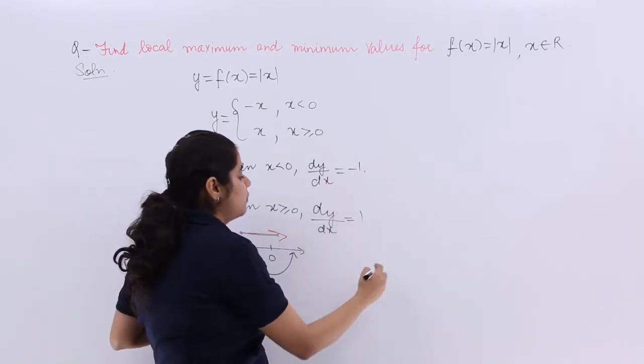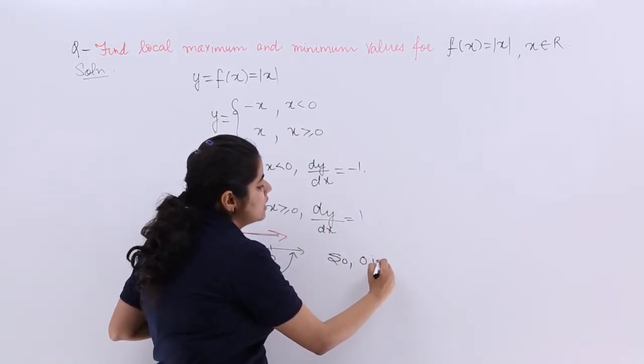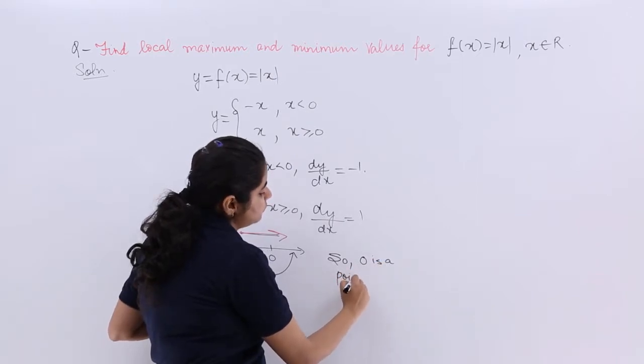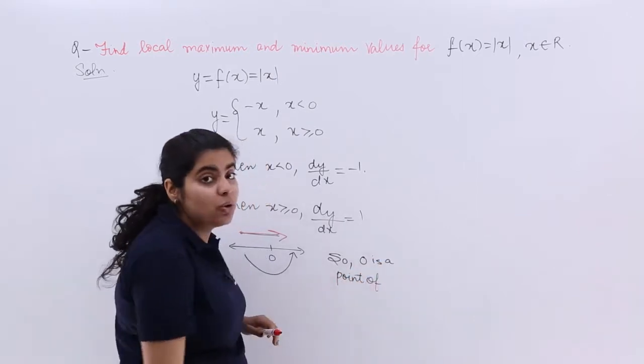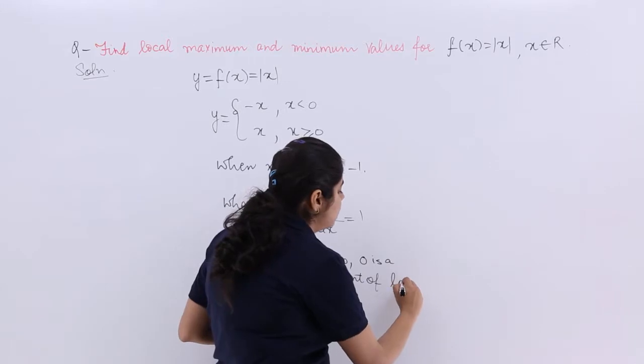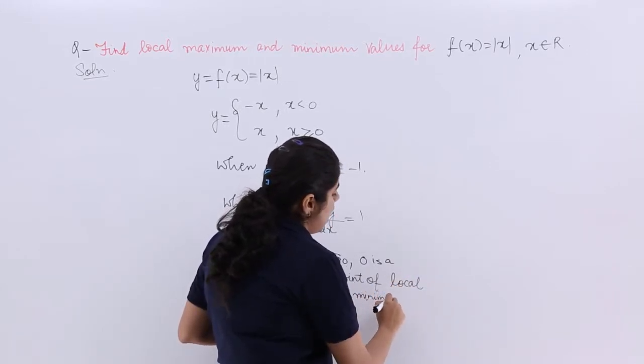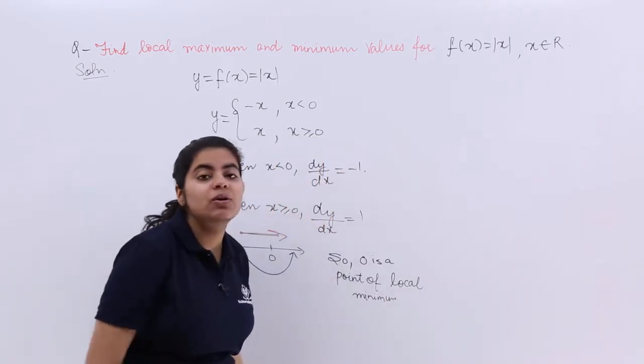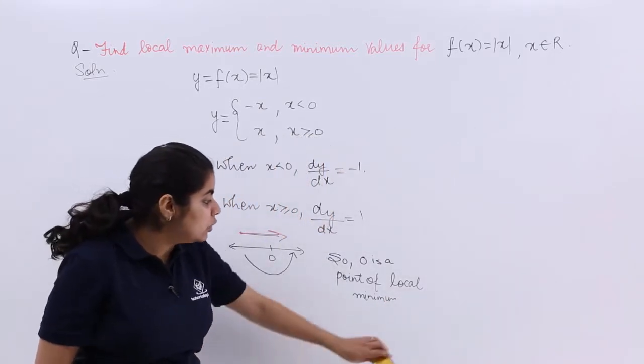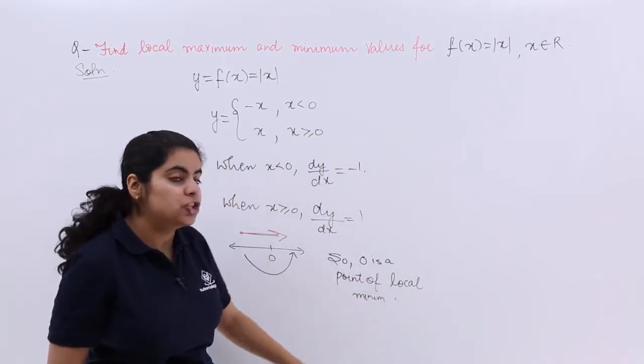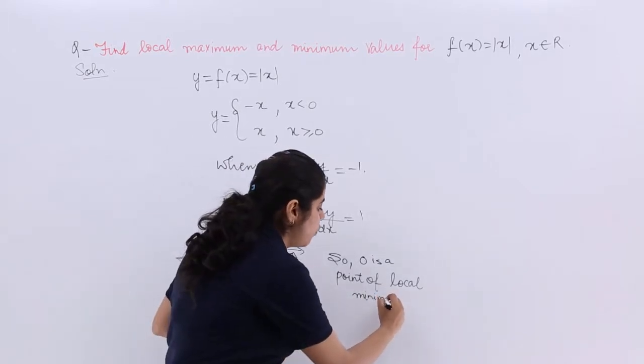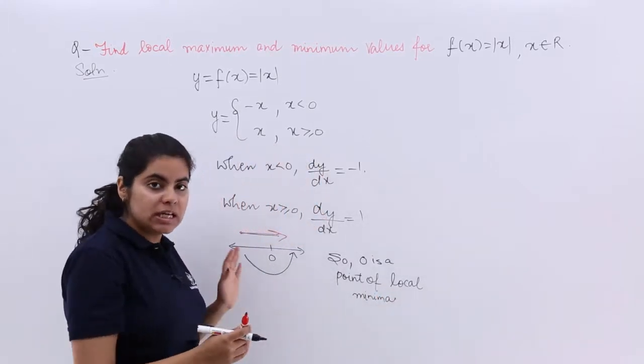Since it is going from negative to positive, I can say that 0 is a point of local minima. How can I say that? Because my f'(x) changes sign from negative to positive as I move from left hand side of 0 to right hand side of 0.